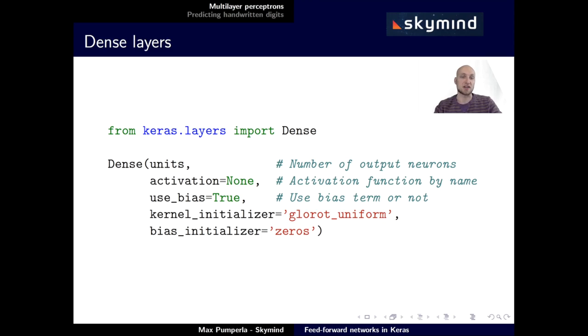Secondly, usually you want to provide an activation function. If you don't, there won't be any. There's none right there as a default keyword. If you want to have a sigmoid, then simply put the name sigmoid there, or relu, or tanh, whatever you like.